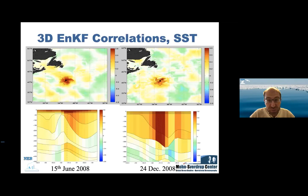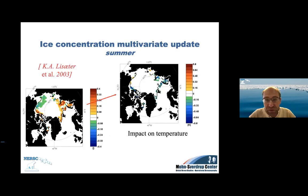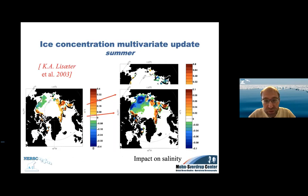Sea ice assimilation is tricky: ice only forms when water is cold and it depends on salinity. When assimilating sea ice concentrations, we add or remove ice along the ice edge. Where ice is added, the water is colder — the ensemble captures this because different members have different ice edge locations. More interestingly, there are large salinity differences even far from the ice edge, and the sign of the relationship between assimilating sea ice and salinity changes depends on the oceanography of the area and the season.